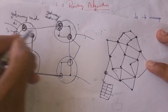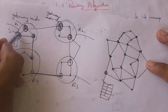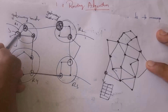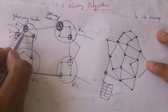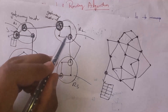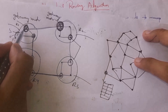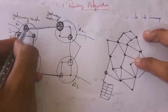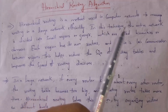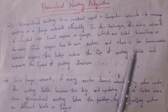For example, let's say this is region 1, region 2, region 3, and region 4. If a router in one region wants to communicate with a router in another region, they cannot communicate directly. So the source router sends data to the gateway router, which then transfers the data to the destination region. Through the gateway router, a router in one region can communicate with a router in another region.